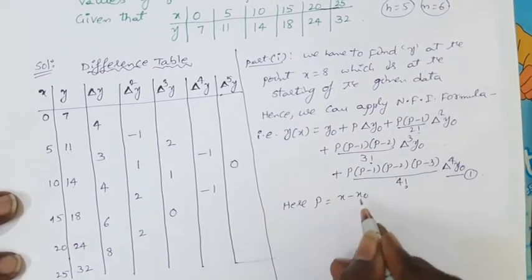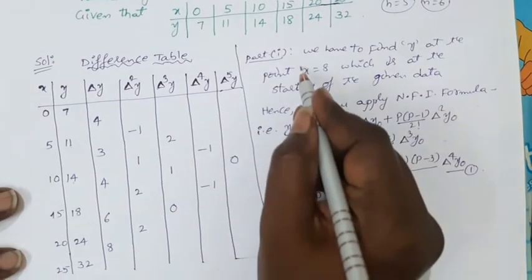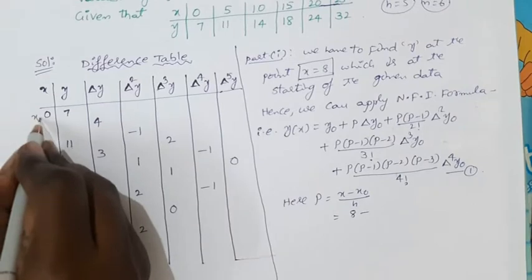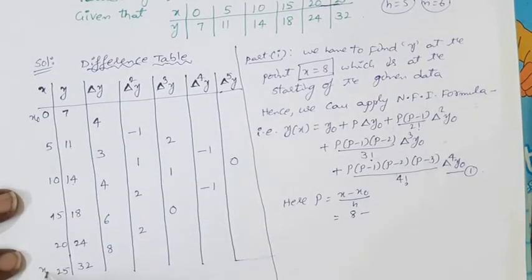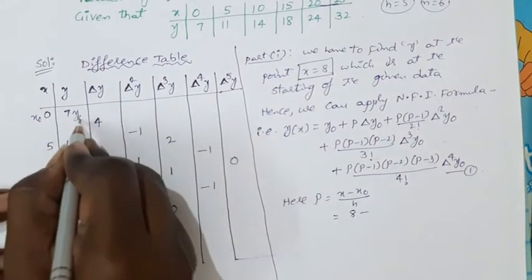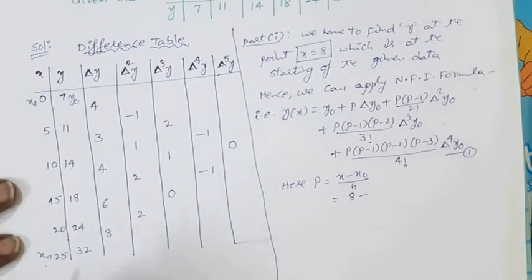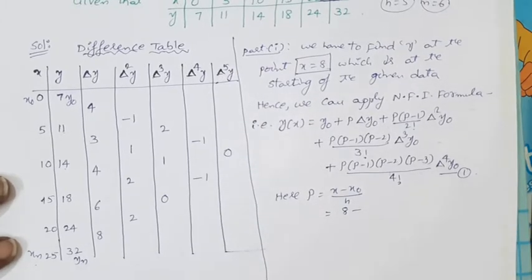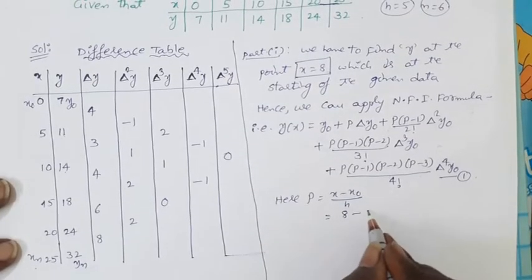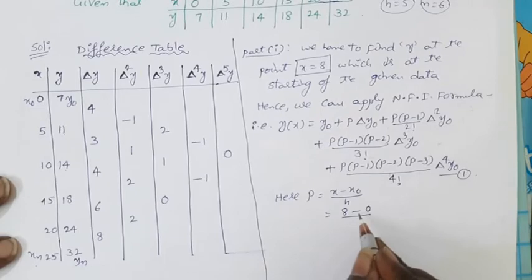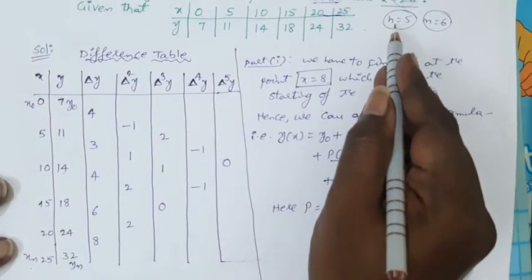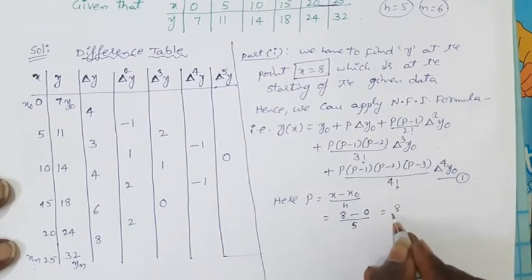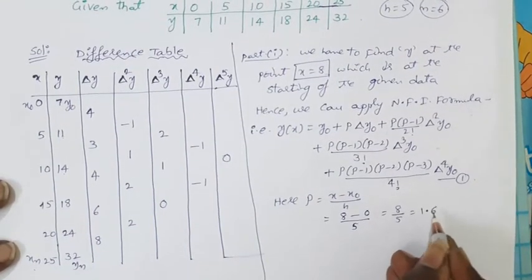Here x = 8, x₀ = 0, and h = 5, so p = (8 − 0)/5 = 8/5 = 1.6. Also note that y₀ = 7 and yₙ = 32.